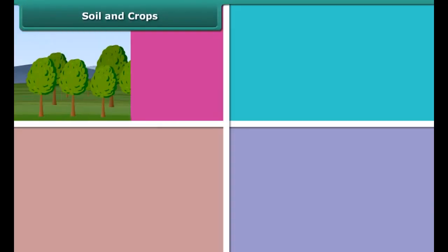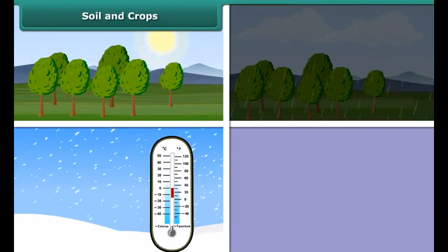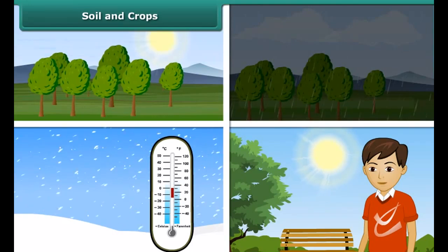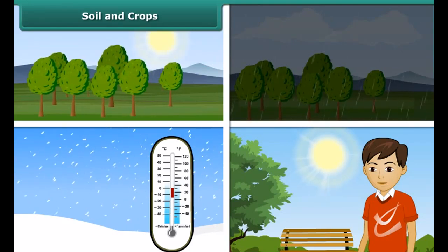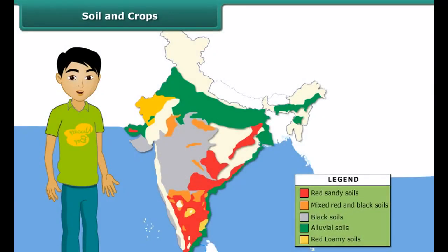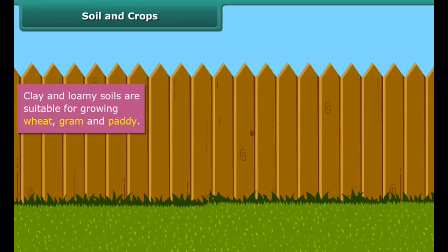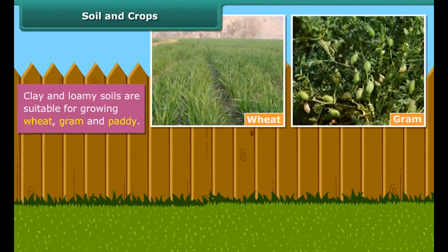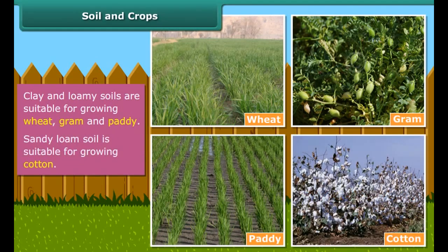Soil profile is affected by wind, rainfall, temperature, light and humidity. These factors determine the type of vegetation grown in that region. India is a vast country and different types of soils are found here. Clay and loamy soils are good at retaining water, so they are suitable for growing wheat, gram and paddy. Cotton is grown in sandy loam soil which can drain water easily and can hold plenty of air.